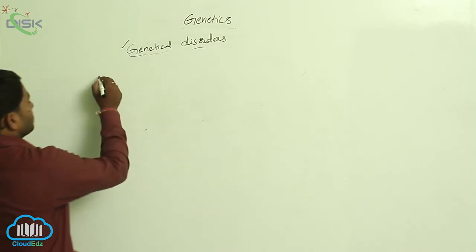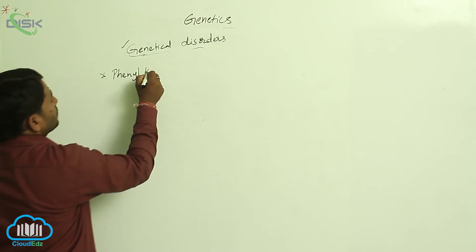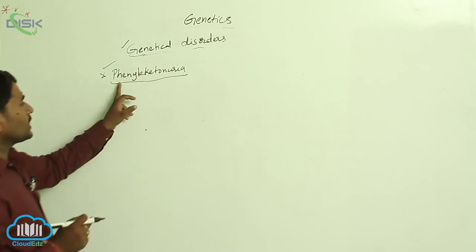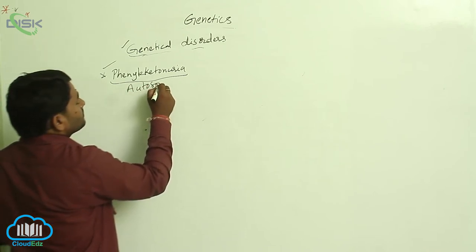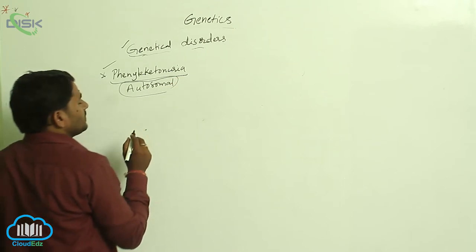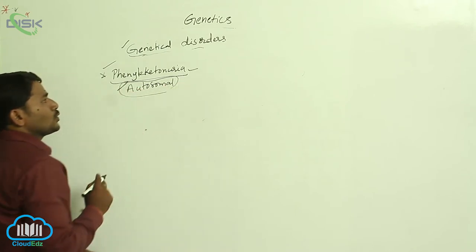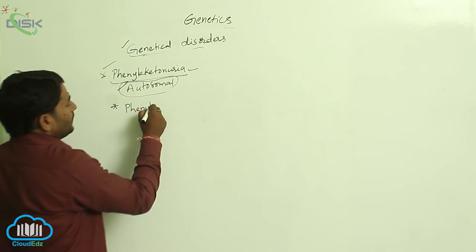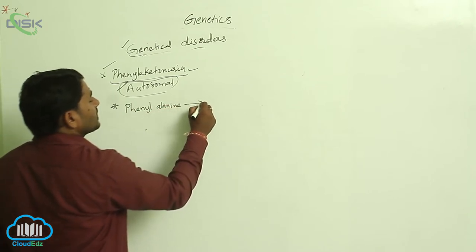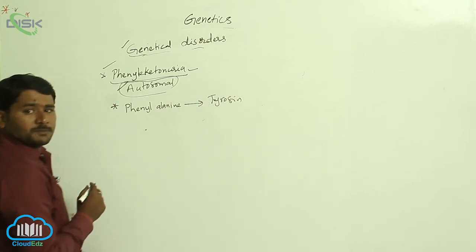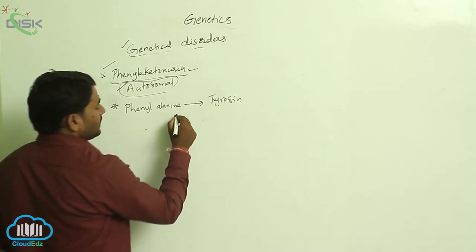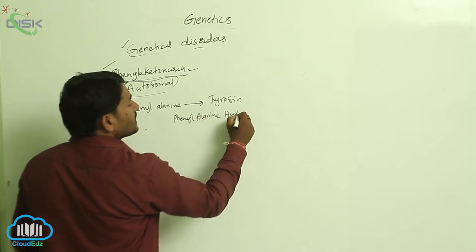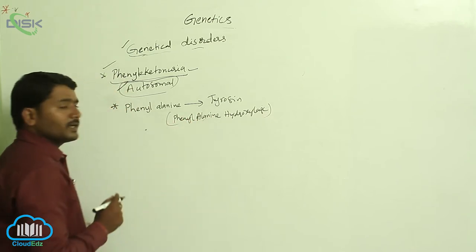The next disorder is phenylketonuria. Phenylketonuria is an autosomal disorder, meaning the gene responsible for the disorder is located on the autosomes. In normal situations, phenylalanine is converted into the tyrosine amino acid by an enzyme called phenylalanine hydroxylase.